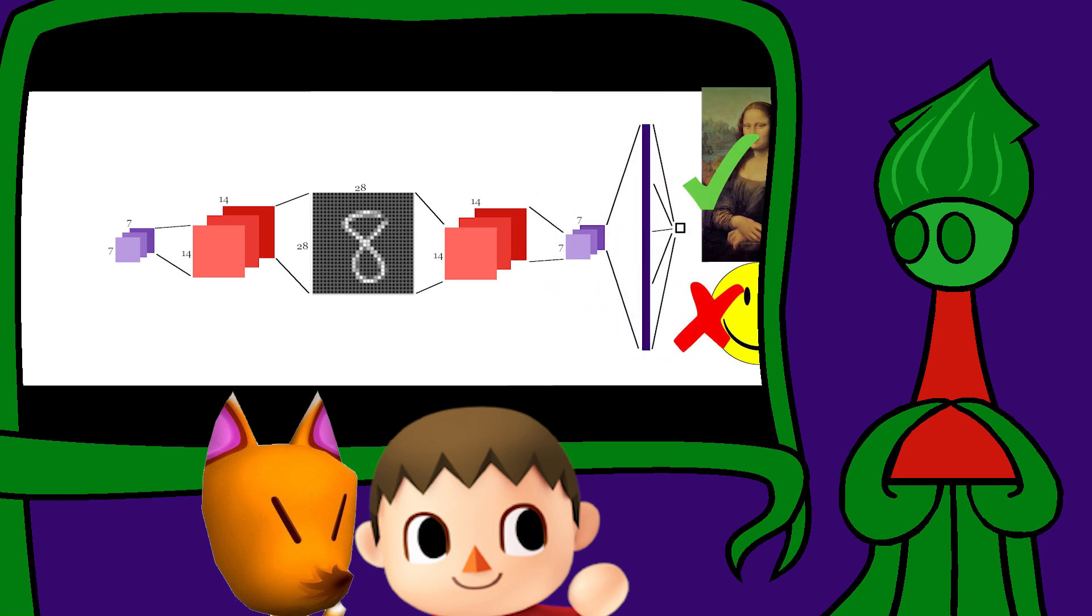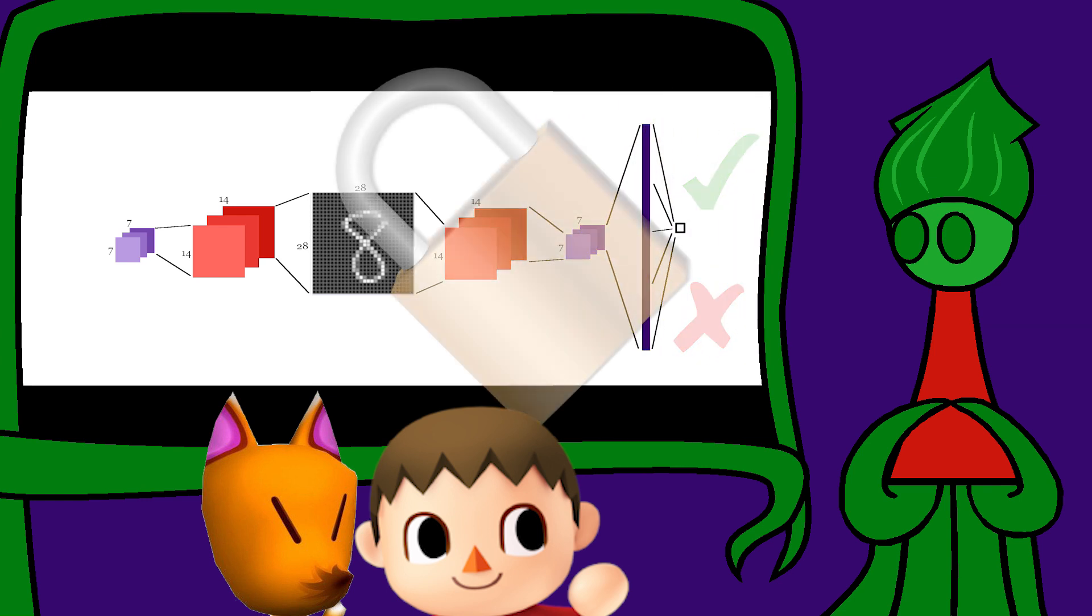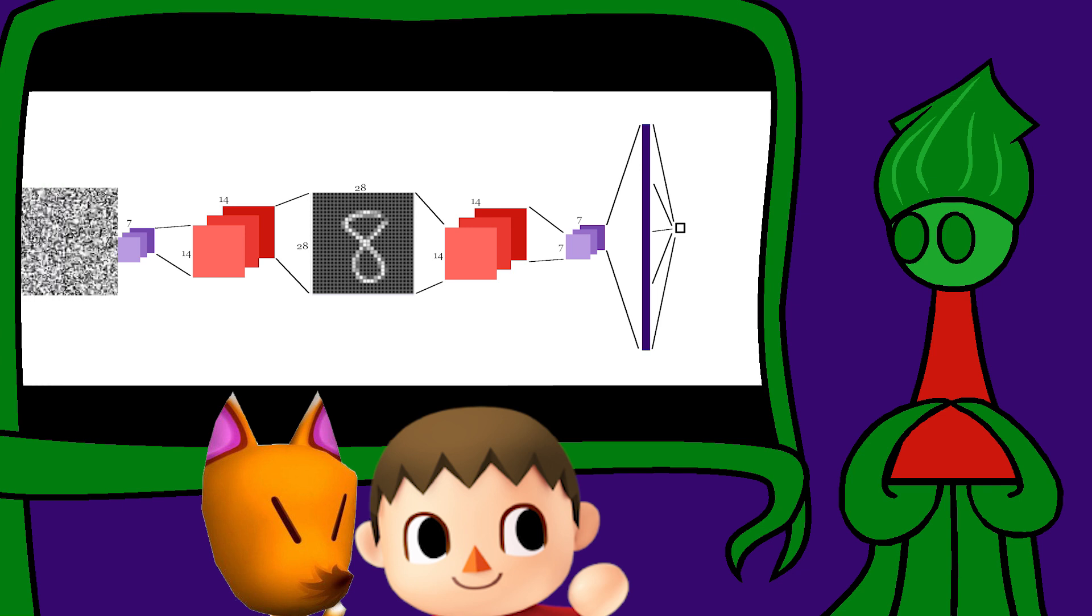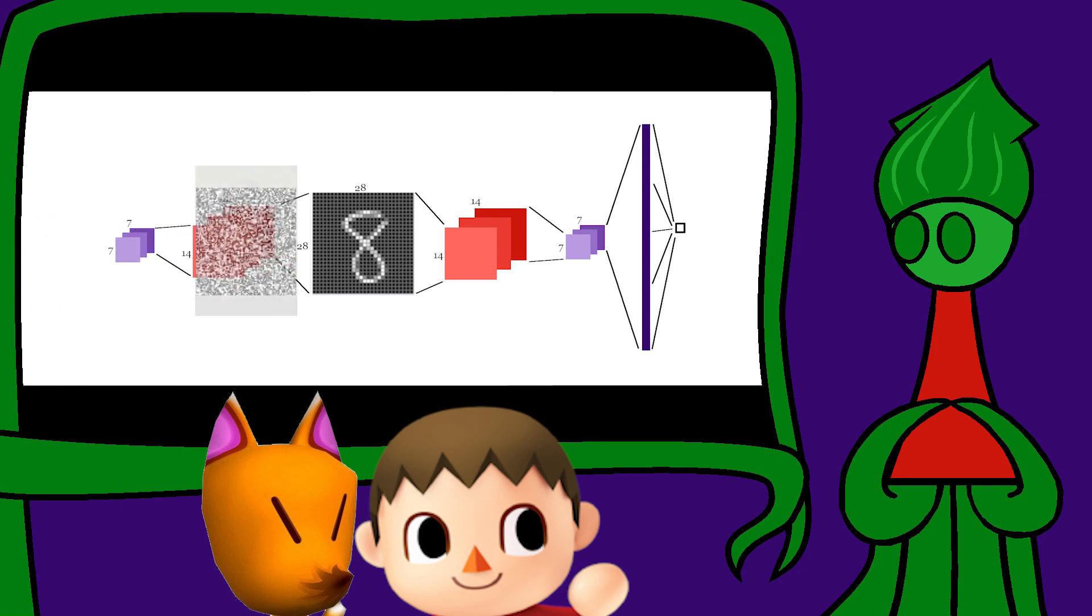which learns to detect the fakes. Then the discriminator is locked so it can't train, and the generator learns to trick it. This back and forth is a single epoch, and after however many epochs, the generator does pretty well.